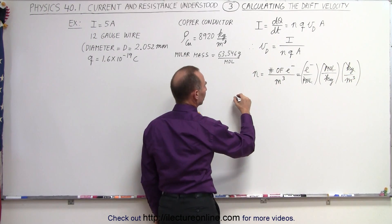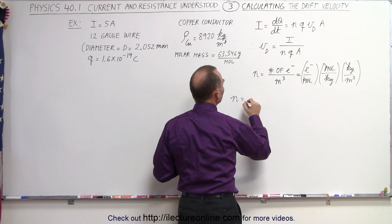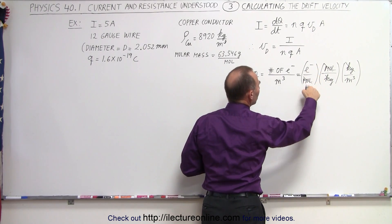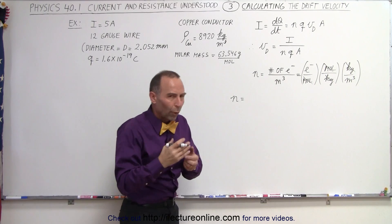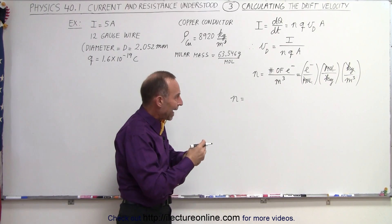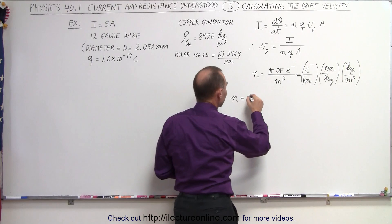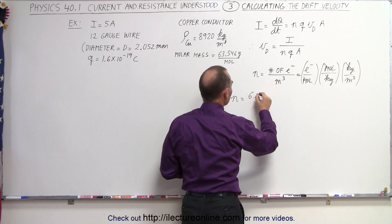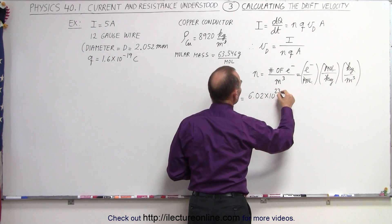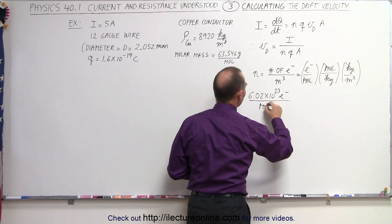Let's figure out what N is equal to. N is going to be equal to the number of charges per mole. Since there's one electron — one charge per atom — and a mole of atoms is Avogadro's number, there will be 6.02 times 10 to the 23rd charges per mole.